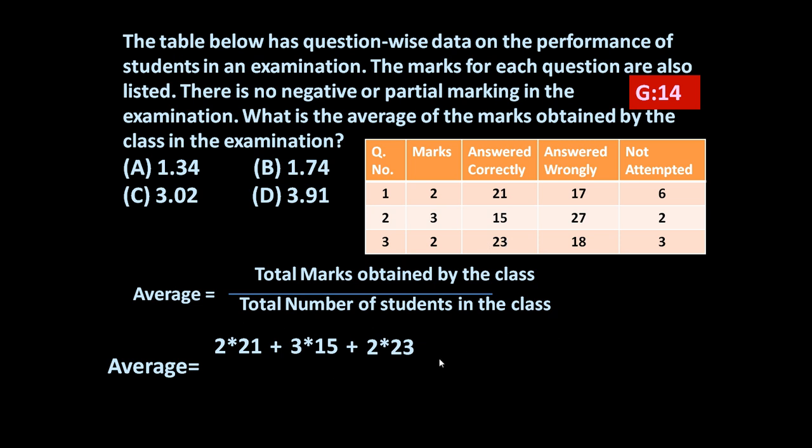So these are the total marks scored by the class divided by total number of students. So total number of students you can take any one of the horizontal line: 21 correctly answered, 17 students wrongly answered, and 6 students did not attempt. So total 21 plus 17 plus 6. This is equal to 133 upon 44.